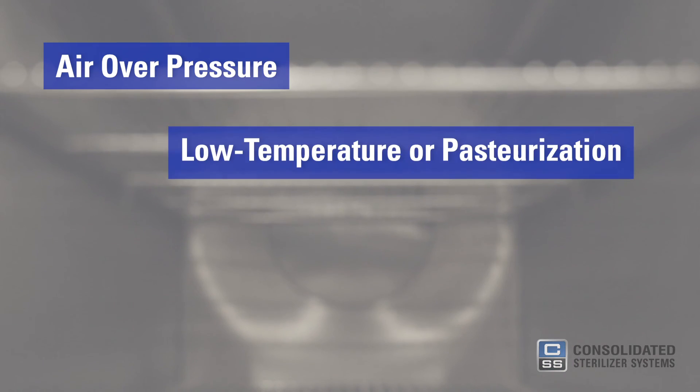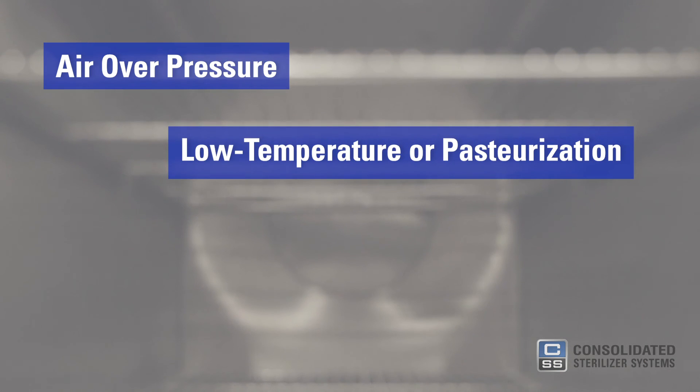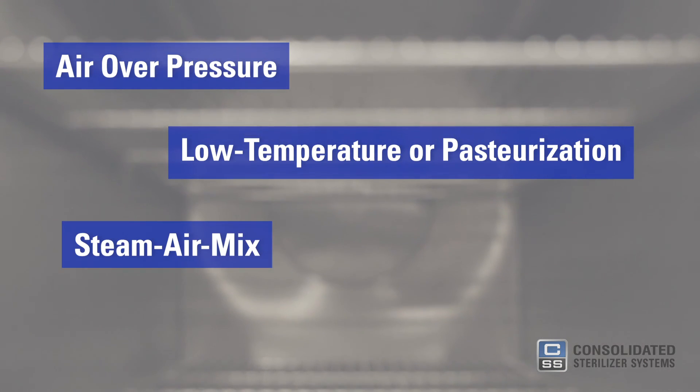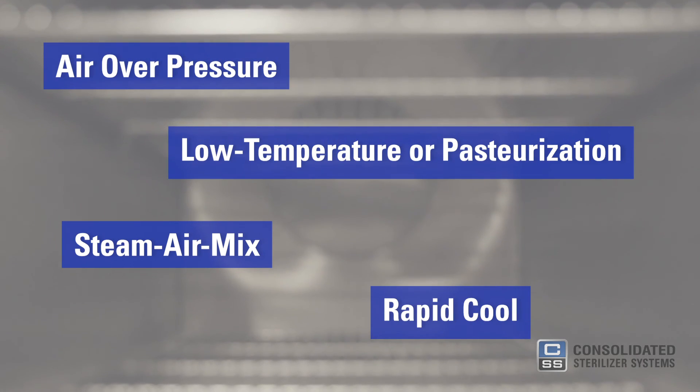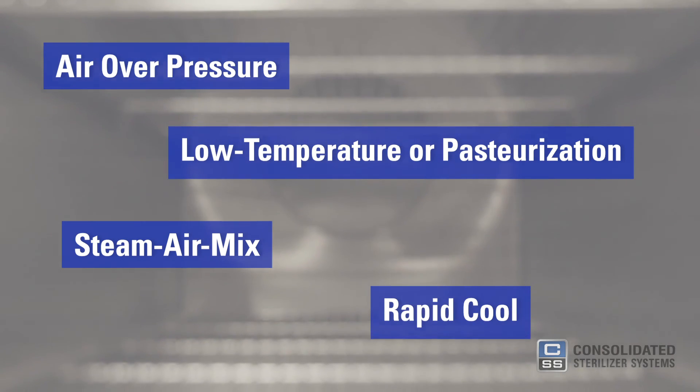It's worth noting that some laboratory autoclaves can perform specialty cycles, such as an air over pressure cycle, low temperature or packed sterilization, steam air mix, and rapid cool. Most of these cycles are for goods that are sensitive to prolonged steam exposure. And there you have it — a beginner's guide to steam sterilization. If you'd like to learn even more, talk to a sterilization specialist at Consolidated Sterilizer Systems today.